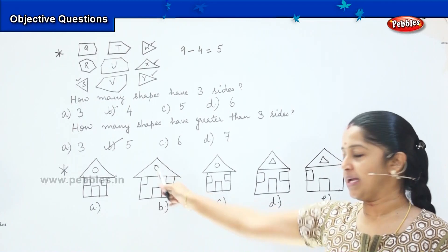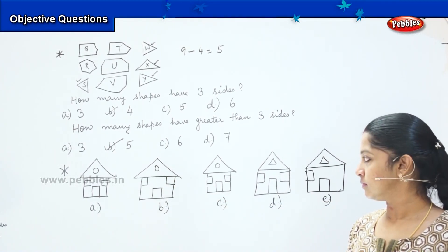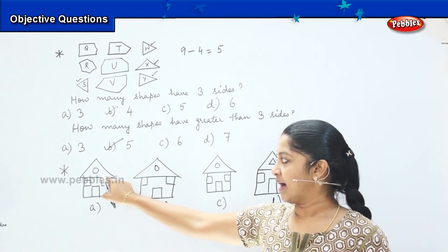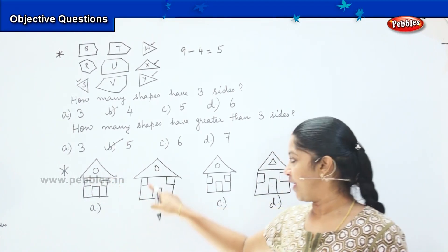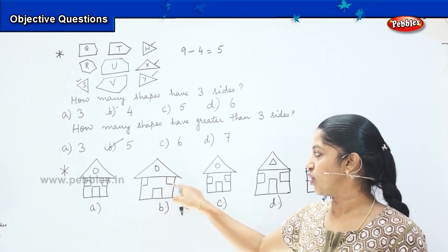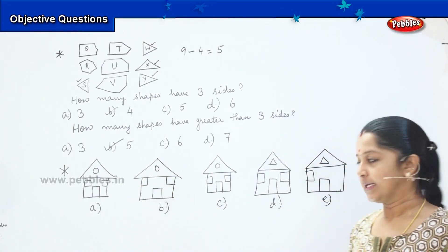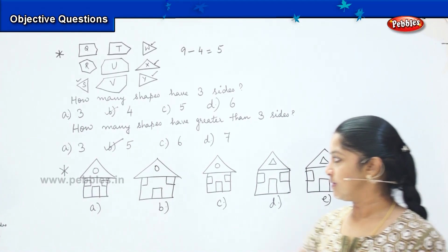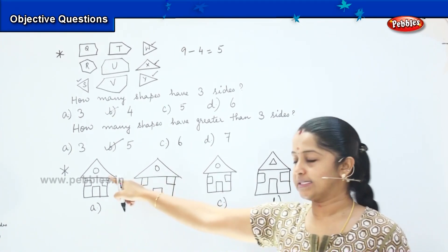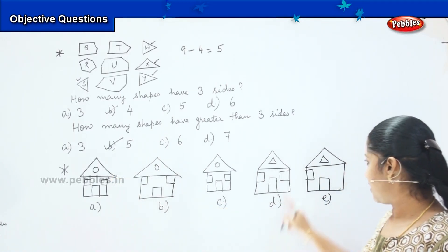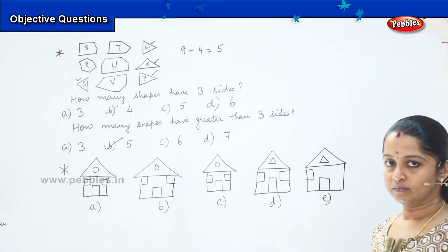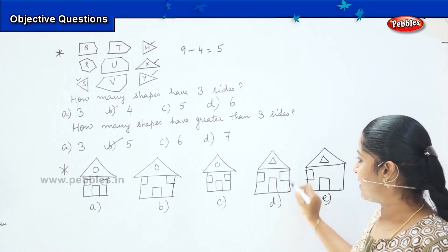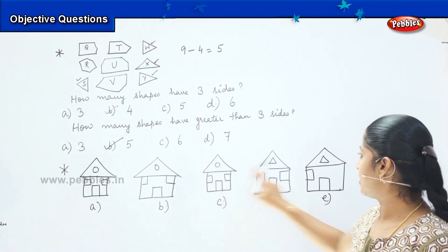Is it A and B? No, because here the windows are having a space from the top, whereas here the windows are exactly joining the roof. Is it A and C? Yes, because they are similar. Can you say C and D? Because this triangle is joining immediately. There is no space over here. Can you see children?